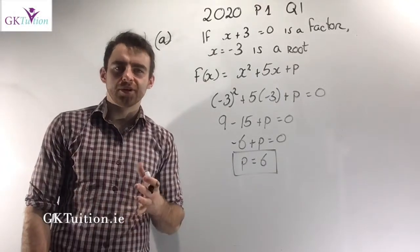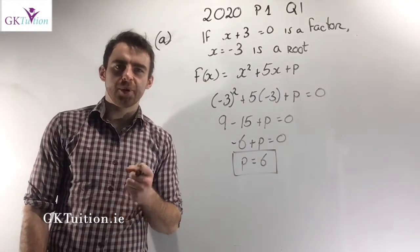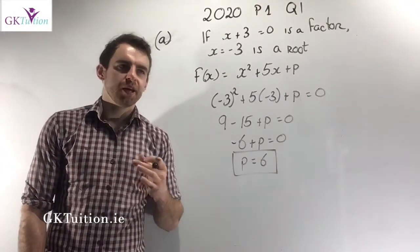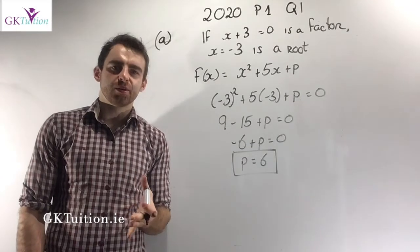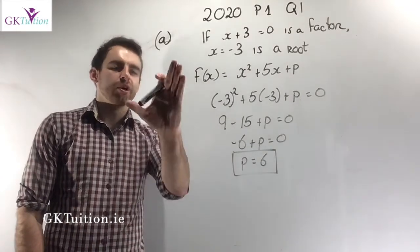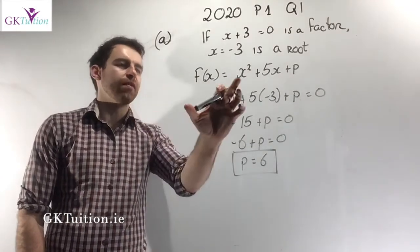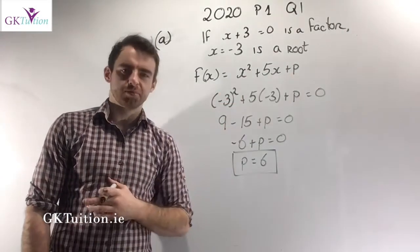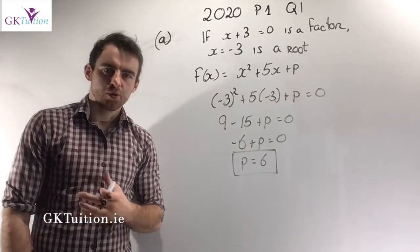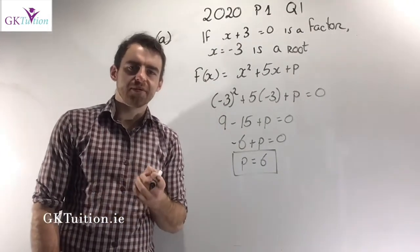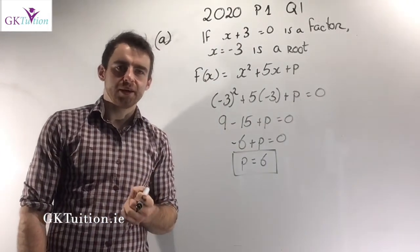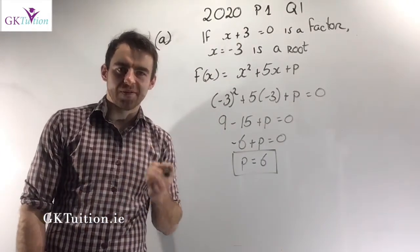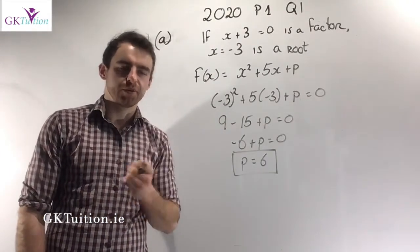In this video I'm going to talk to you about 2020 paper 1, question 1. In the first part of this question, we're given the function f of x equals x squared plus 5x plus p. We're asked to find the value of p for which x plus 3 is a factor of the function.